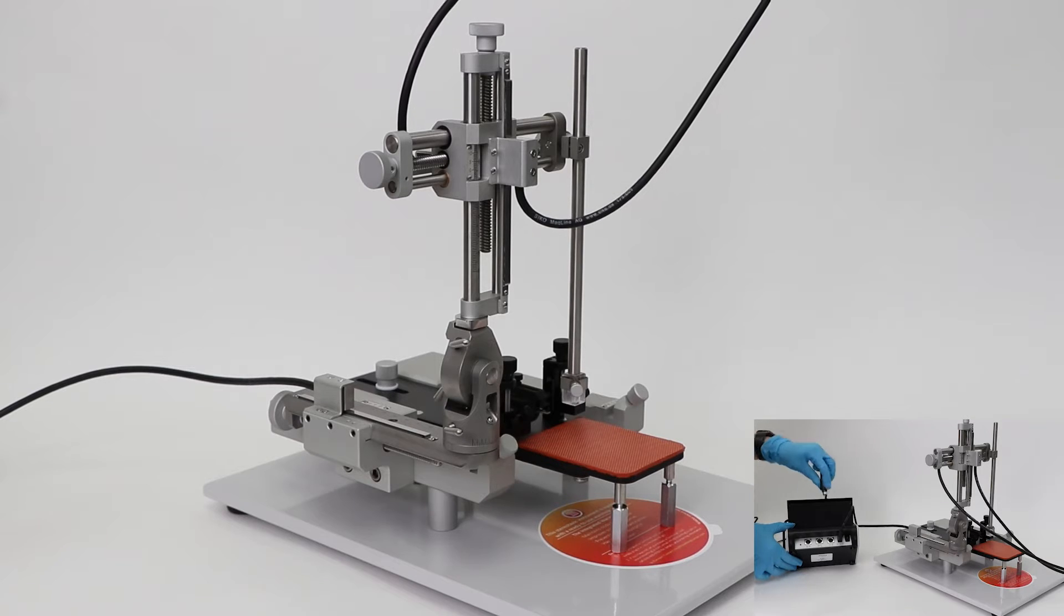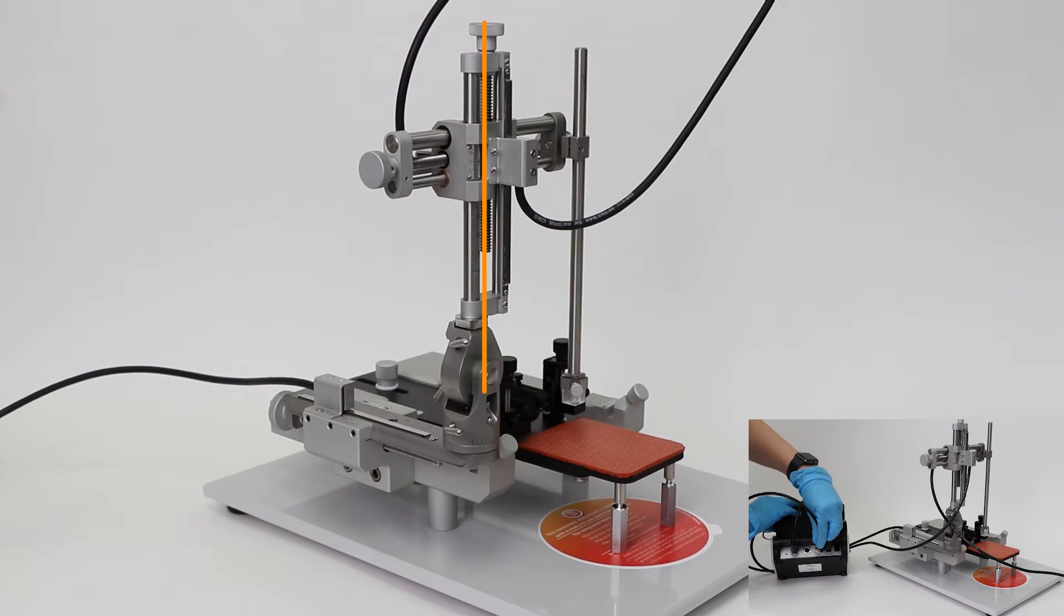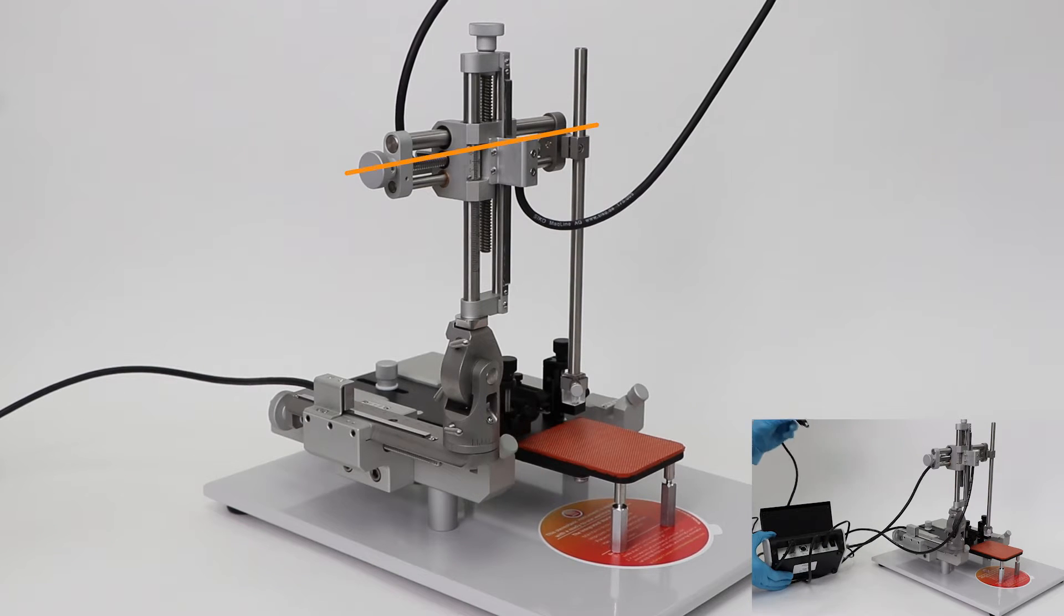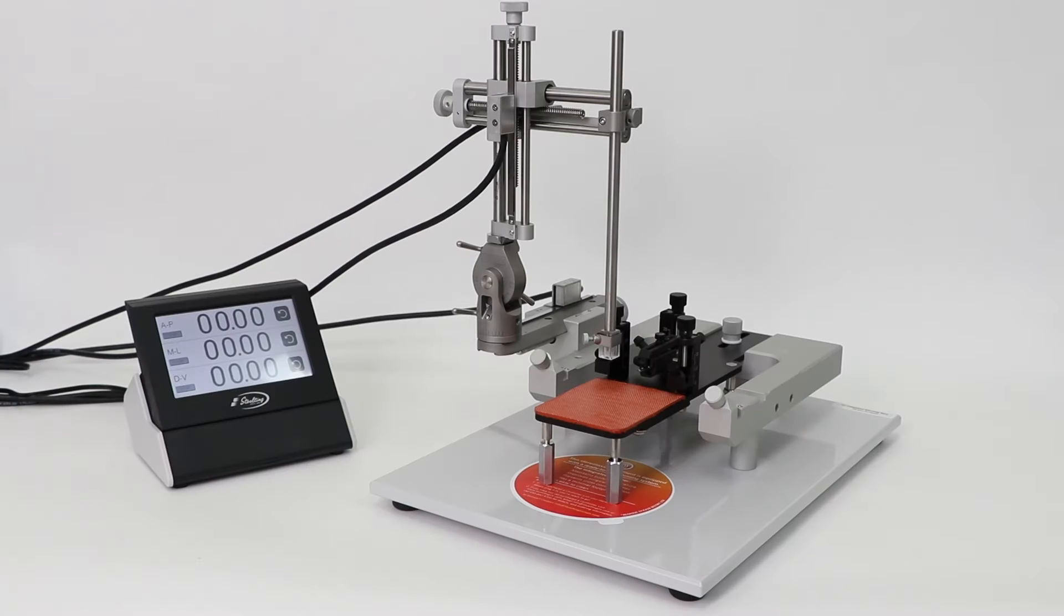Take the cables attached to your anterior posterior, dorsal ventral, and medial lateral axes and plug them into the corresponding cords on the digital display. Your stereotax manipulators are now integrated with your digital display.